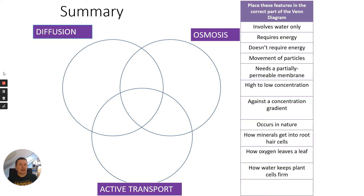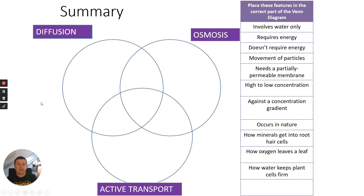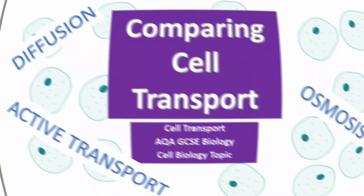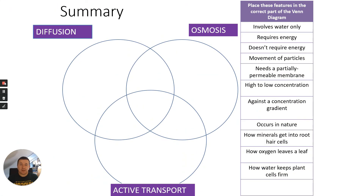On the right-hand side I've got a list of features. What I'd like you to do is pause this video, copy the Venn diagram, and write down which features you think would go in which sections. So pause now and have a go. Hopefully you did pause the video and had a go yourself, otherwise you're not going to learn very much, so I'd really ask you to do that first.